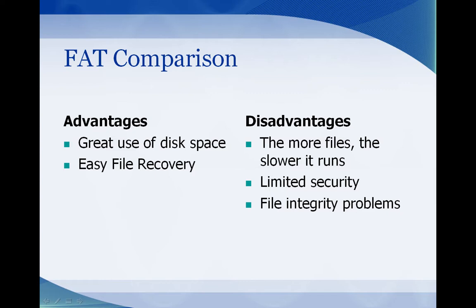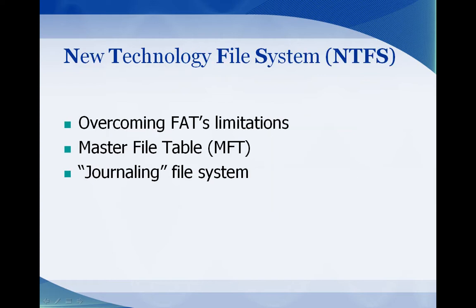Some of the advantages of the FAT file system: it's efficient use of disk space—it just puts pieces of the file wherever there's room. If you delete a file, it only deletes the entry from the FAT table, and the data is stored in the data section until another file writes over it. So it's pretty easy to recover missing files. Now some of the problems with FAT: it does run a little slower the more files that are added to the disk. There's no security on the drive, so anyone can plug that hard drive in and access your data. FAT also tends to have file integrity problems, lost clusters, or invalid files.